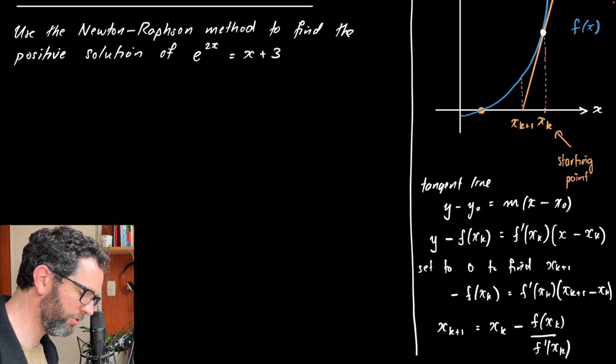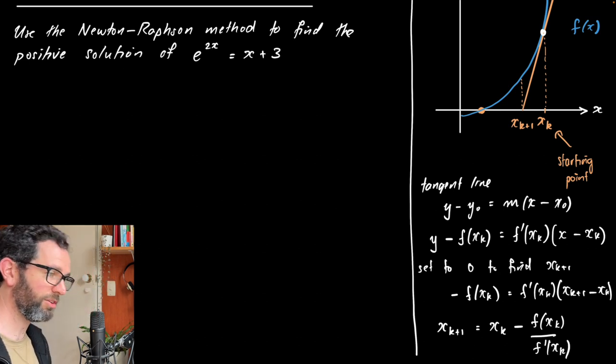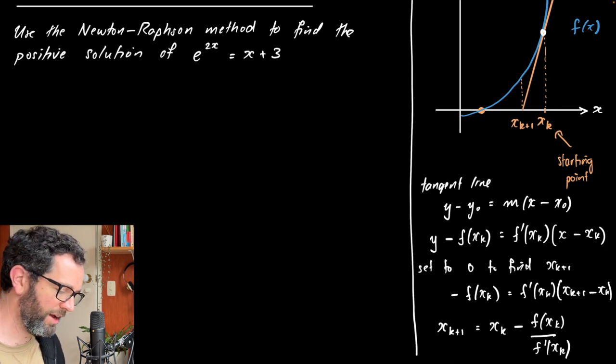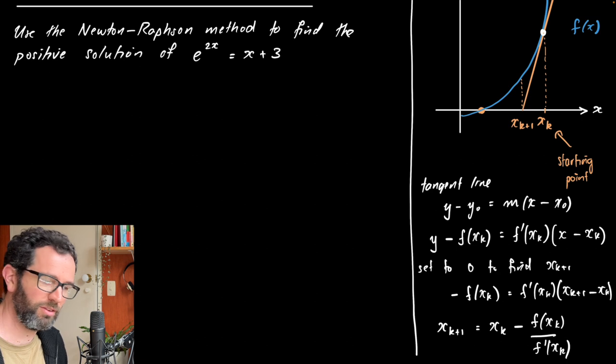So really all we have to do is find out, take our function, assuming we can calculate its derivative, and then just repeat that process over and over again until we find, until we're close enough to our value and it seems to have stopped changing or it's accurate enough for us.